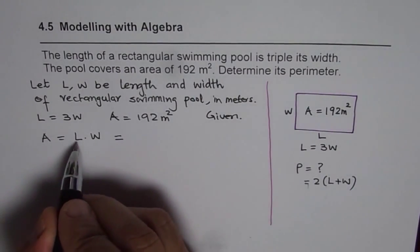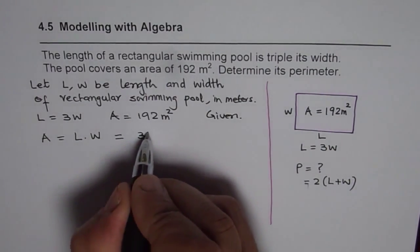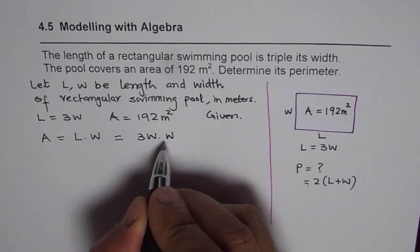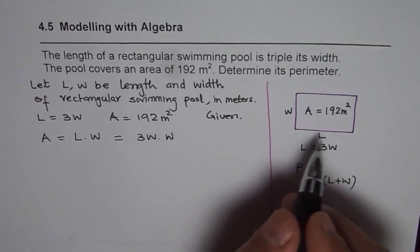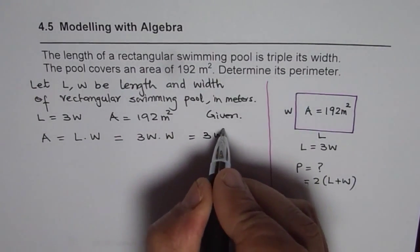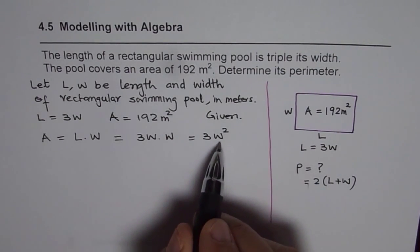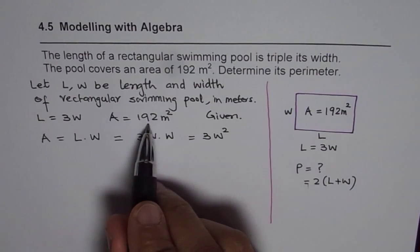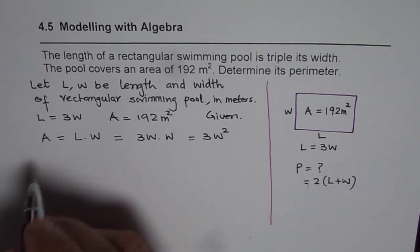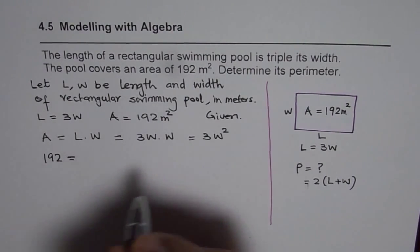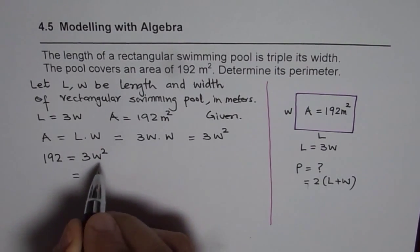Since length equals 3W, we can replace L with 3W in the area formula. So area equals 3W × W, which gives us 3W². This is an expression in a single variable — the width of the pool. We know the area is 192, so substituting gives us 192 = 3W², and we can now solve for the width.